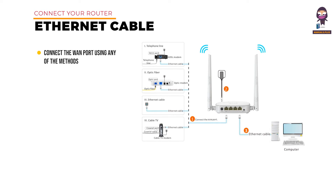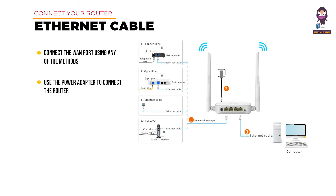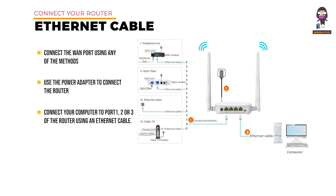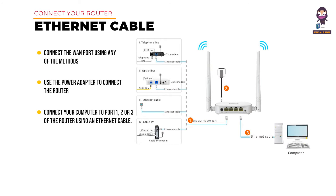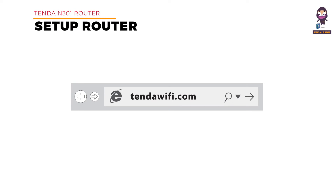Connecting to your router using an Ethernet cable: connect the internet port using any of the methods shown in the following figure depending on your internet connection type. Use the power adapter to connect the router to a power supply. Connect your computer to port 1, 2, or 3 of the router using an Ethernet cable.